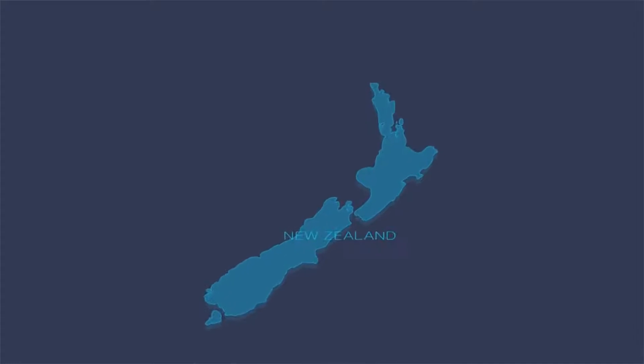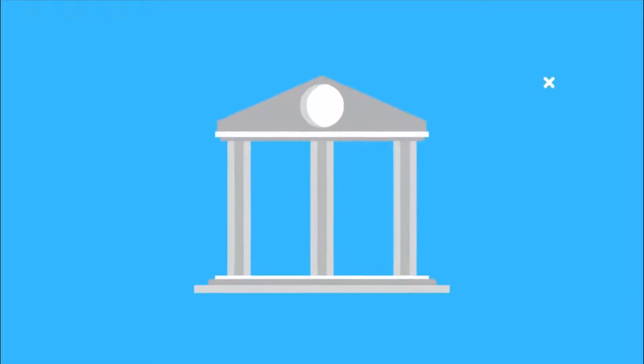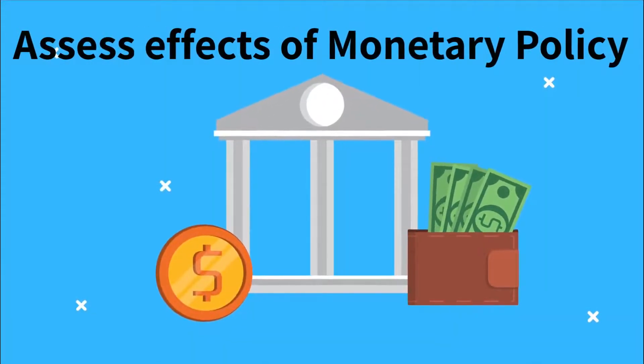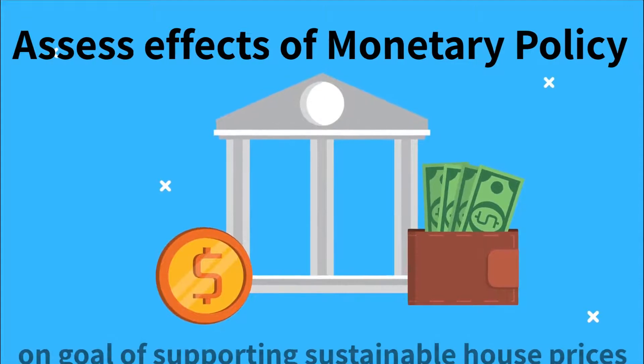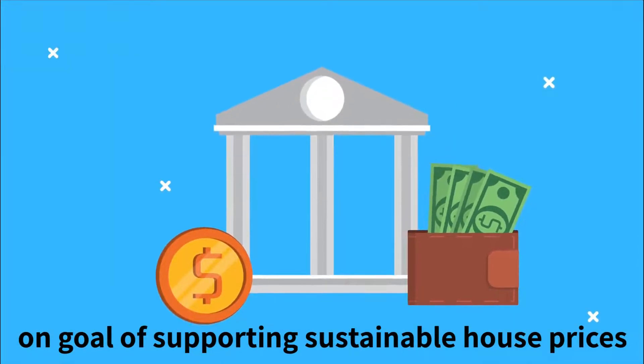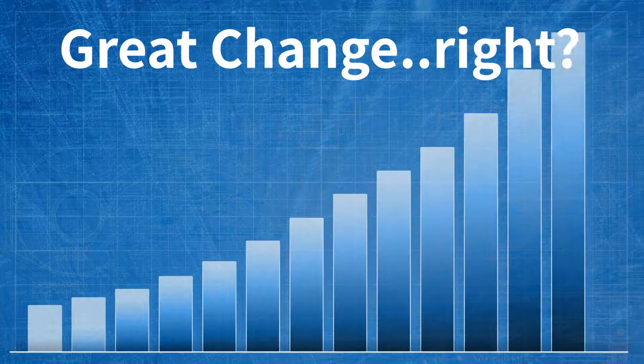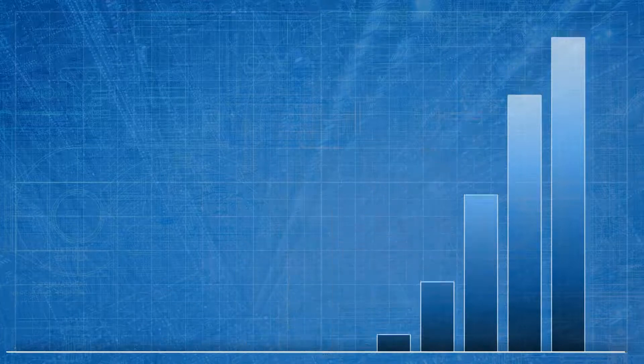But check out New Zealand as an example. This year, they became the first country to require its central bank to assess the effects of its monetary policy decisions on the government's objective of supporting more sustainable house prices. This seemed like a great change to match the continued rising prices, right? Well, yes, but the change was not as revolutionary as they had hoped.